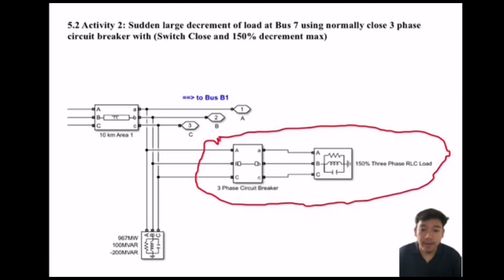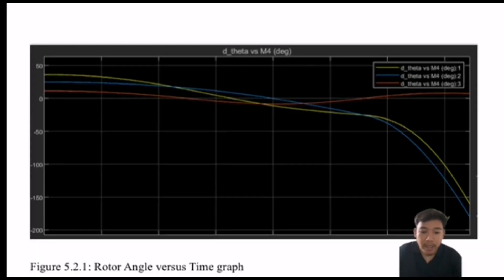Next, we will look at the sudden large decrement of load at bus 7 using a normally closed 3-phase circuit breaker with switch closed and 150% decrement max. The load condition at bus 7 is connected to a 3-phase circuit breaker in parallel to an RLC load. When the circuit breaker is open, it causes a large increment to the load; when closed, it causes a large decrement. The power system stability will return to normal when the load decreases more than 150% from the initial load. For the rotor angle versus time graph, the decreasing load demand affected thermal equilibrium as the rotor angle of area 1 differs from area 2.